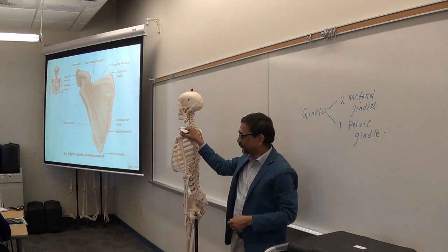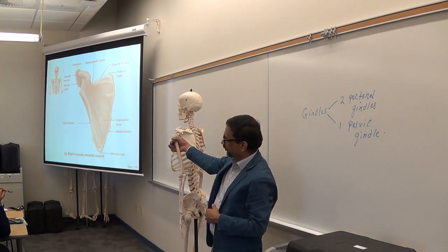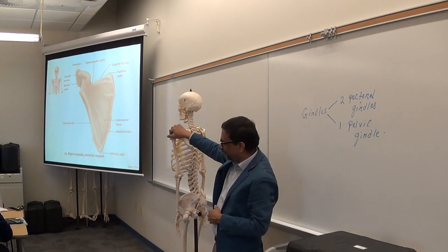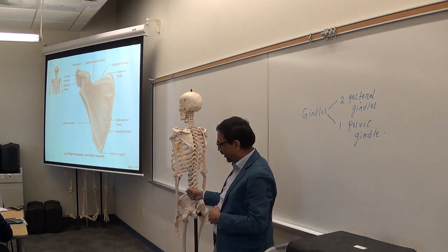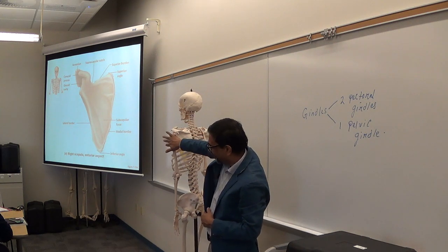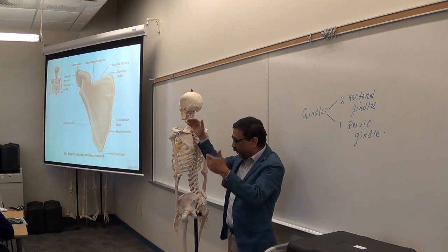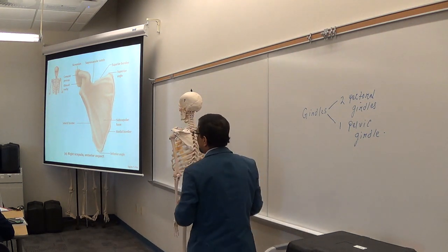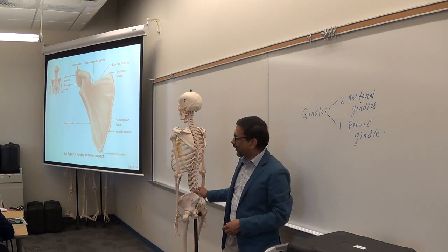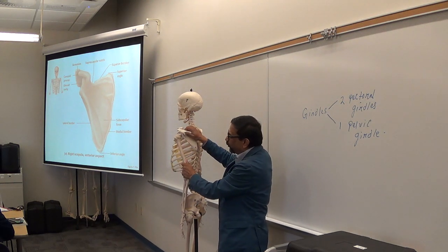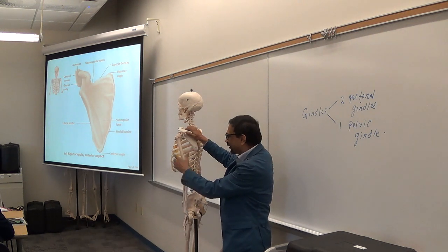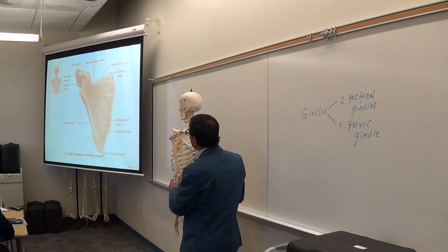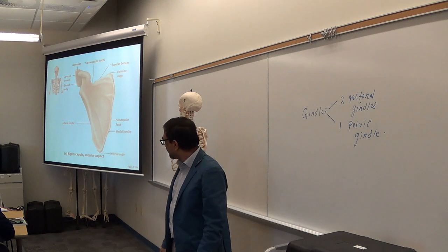A student asked: is dislocation more likely than fracture? Yes — it depends which way you hit the bone. If you hit from the top or bottom, dislocation is most likely. A sideways hit is more likely to cause fracture. Shoulder dislocation is quite common in sports. If it happens, you can push the head back into the cavity, but don't do it yourself.